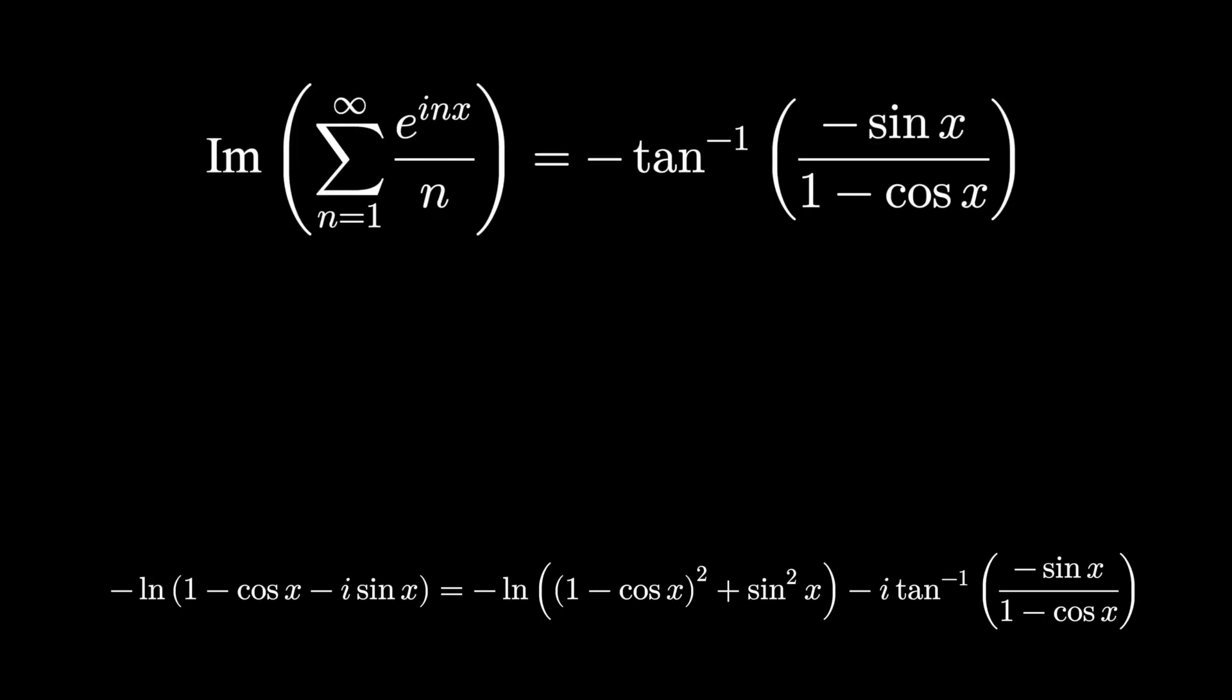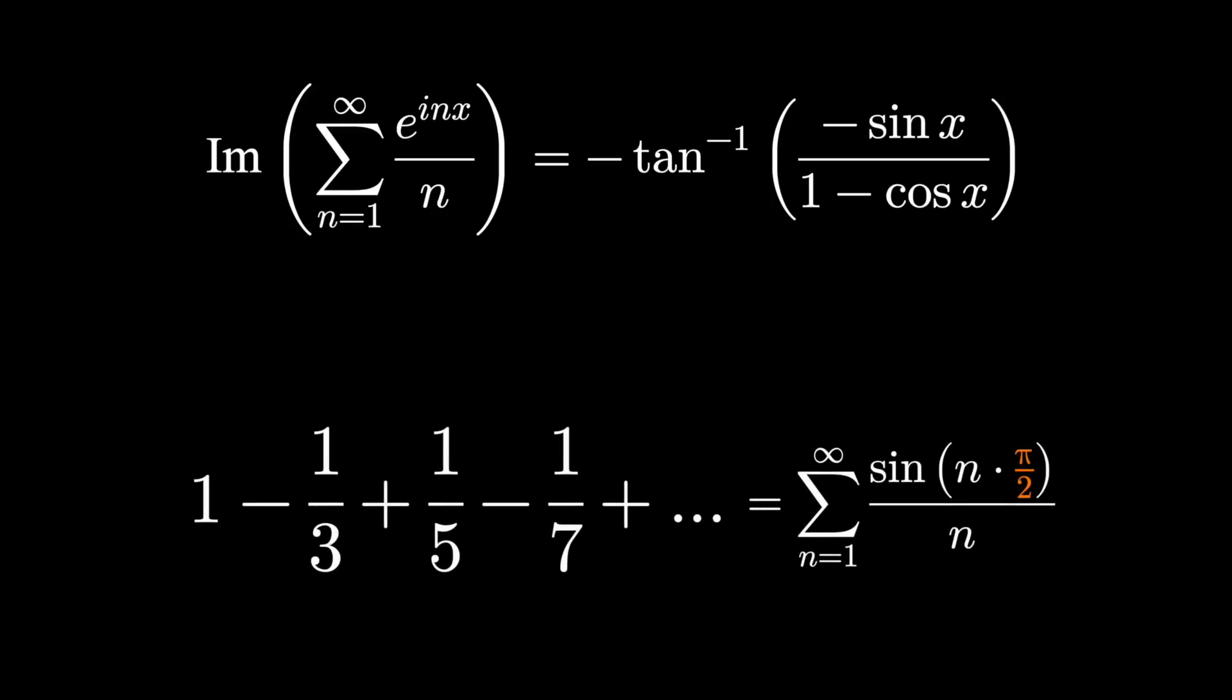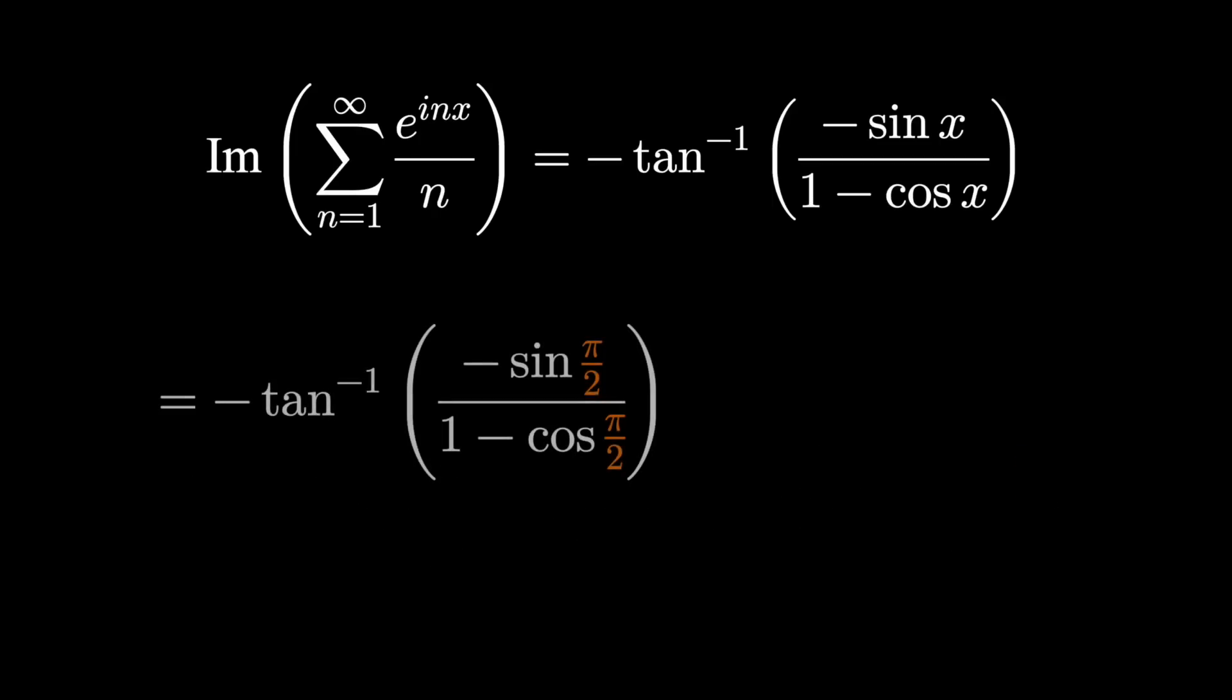And if you string this all the way back to the beginning, this was connected to the original series by substituting pi over 2. If we plug in pi over 2, we get that sum in question. We also plug in pi over 2 to the other side. That's inverse tangent of sine of pi over 2 over 1 minus cosine of pi over 2. Using a little bit of trig knowledge, that'll be inverse tangent of 1, which is pi over 4.